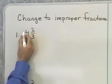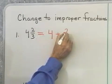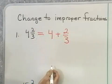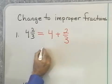Now, this notation, 4 and 2/3, is a shorthand notation for 4 plus 2/3. So, if I want to change this to an improper fraction, I have to add 4 and 2/3 together.